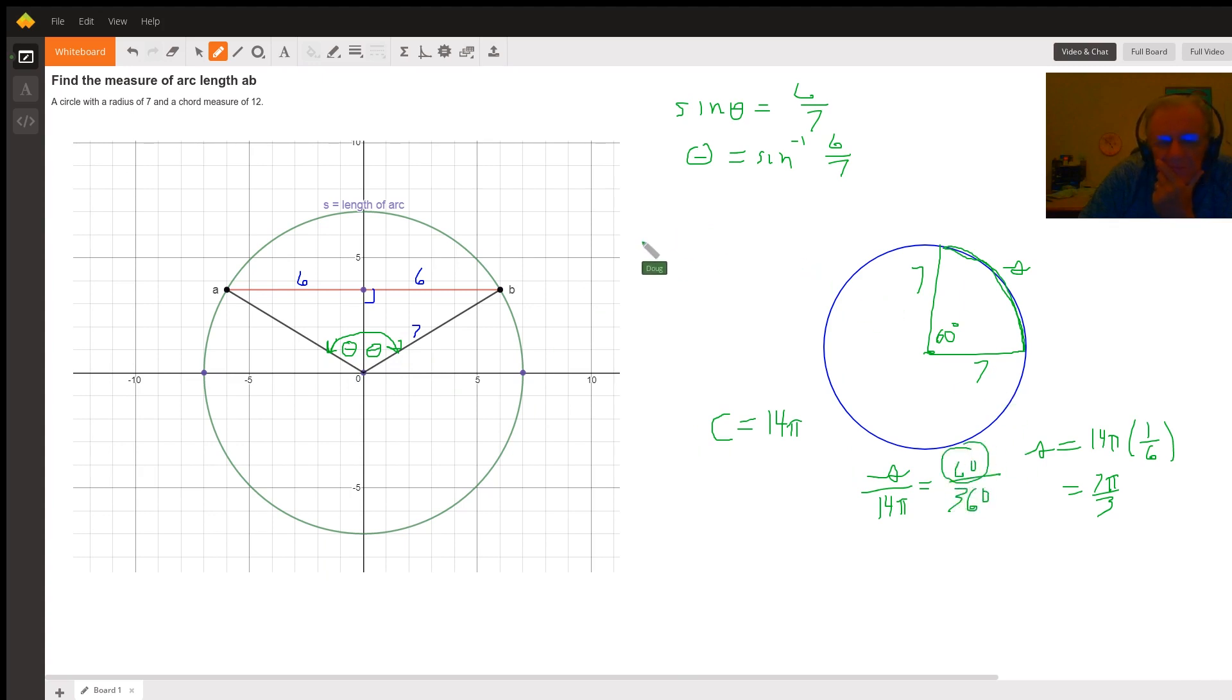So let's say S equals the circumference of the circle, which in this case is 14 pi, 2 pi r. The angle is twice theta, which we know theta is the inverse sine of 6 sevenths, divided by 360.